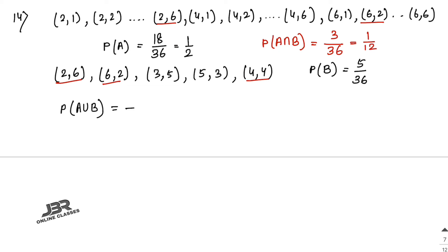So P(A union B) = 1/2 + 5/36 − 1/12, and the answer is 5/9.